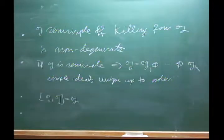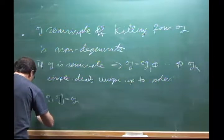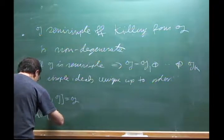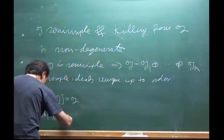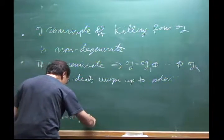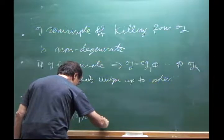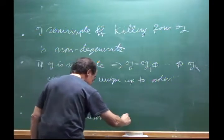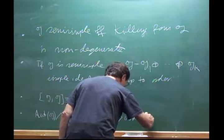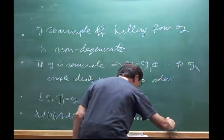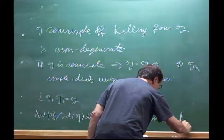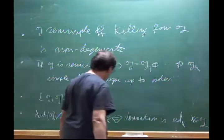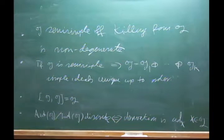There was one more we proved: out(G) mod inn(G) is discrete, meaning every derivation is inner — of the form ad_x where x lies in G. All derivations look like this, which is another important property.